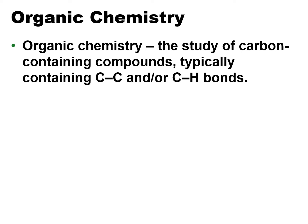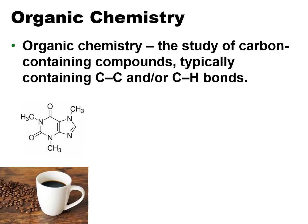There are compounds that contain carbon — like carbonic acid, carbonates, carbon dioxide, carbon monoxide — that are not considered organic compounds. So let's see some examples of organic compounds and how those formulas look.